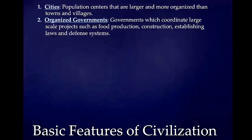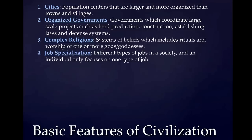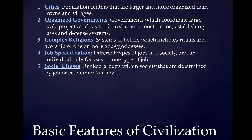The third feature is complex religions. We'll look at this in the next unit, but different religions develop — whether they worship one or multiple gods or goddesses — all over the world with their own different features. The fourth is job specialization, meaning people are able to start branching out and focusing on one type of job, developing an economy where people trade their services or goods with others. The fifth is social classes — lower, middle, and upper class — a ranked group usually determined by a person's job or economic standing.